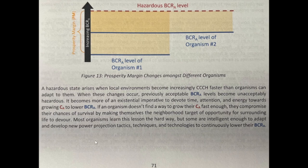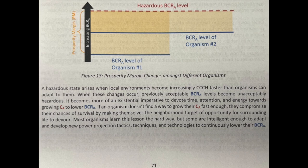A hazardous state arises when local environments become increasingly CCH faster than organisms can adapt to them. When these changes occur, previously acceptable BCRA levels become unacceptably hazardous. It becomes more of an existential imperative to devote time, attention, and energy towards growing CA to lower BCRA. If an organism doesn't find a way to grow their CA fast enough, they compromise their chances of survival by making themselves the neighborhood target of opportunity for surrounding life to devour. Most organisms learn this lesson the hard way, but some are intelligent enough to adapt and develop new power-projecting tactics, techniques, and technologies to continuously lower their BCRA.